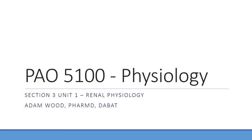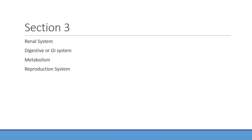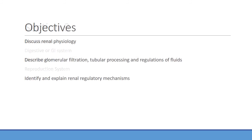We're going to move on and start section three. Everyone did pretty good on the test — I need to work on making it harder, so just be ready for that. The kidney stuff is actually pretty complicated, so we'll camp out here and spend some time. Section three is going to cover mainly renal physiology, the urinary system, digestive stuff, metabolism, and then finally reproductive endocrinology.